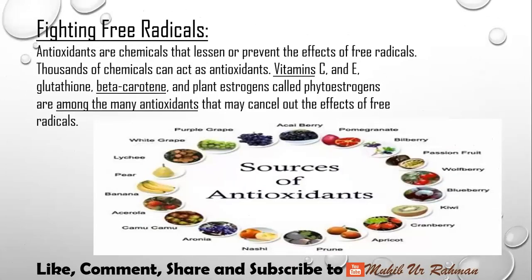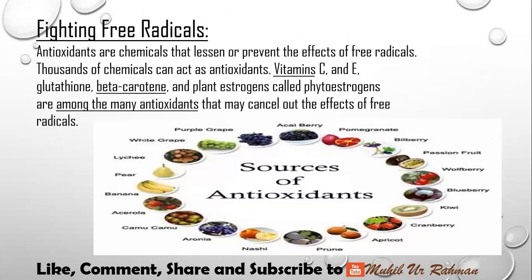To fight free radicals, use antioxidants. Antioxidants are chemicals that reduce or prevent free radical effects. Thousands of chemicals work as antioxidants, like vitamins C and E. The sources of antioxidants include berries: blueberries, wolfberries, cranberries, blackberries, strawberries. All of these are most effective for fighting free radicals. They eliminate free radicals and reduce their harmful effects.